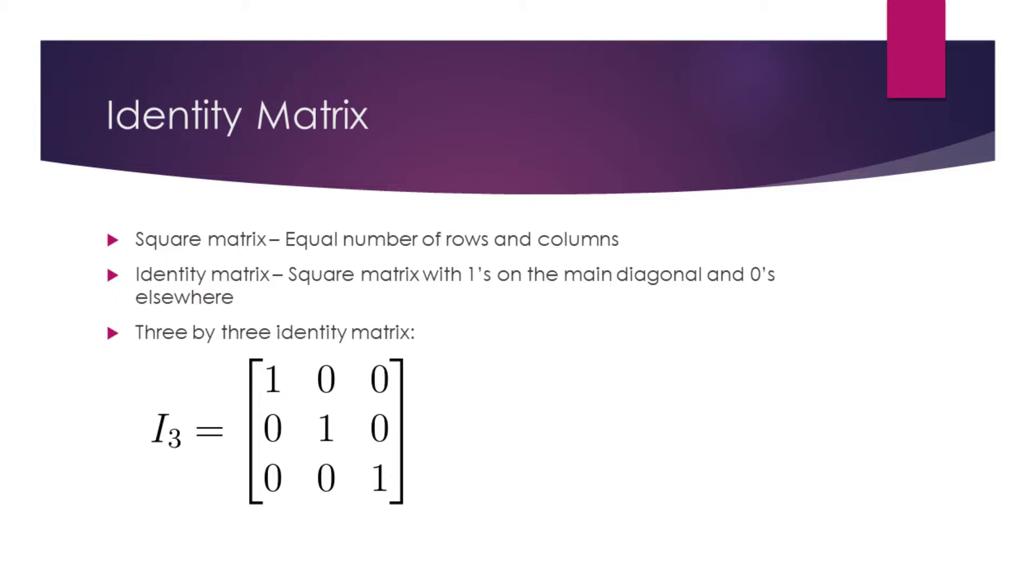Identity matrices have a property that they do not change any vector when we take the matrix product of that vector and the identity matrix.